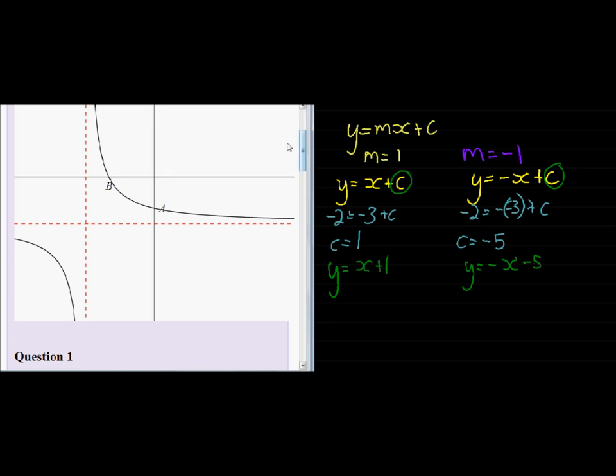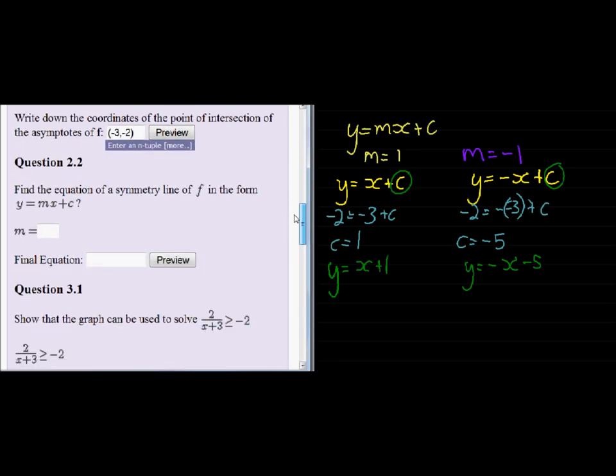Let's choose any one of the two and put in the information they give me. Let's choose the negative 1 and that means we have y is equal to negative x plus, sorry, minus 5.